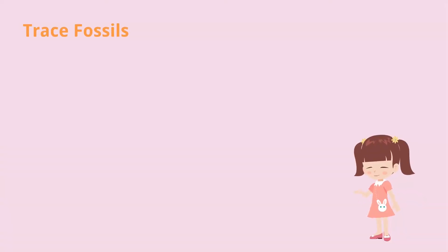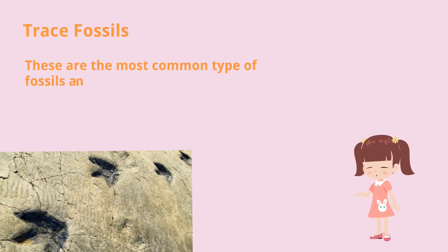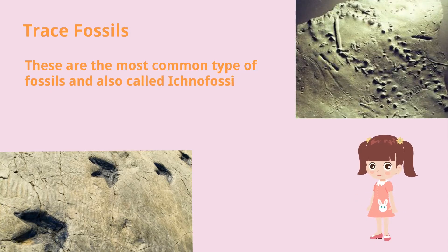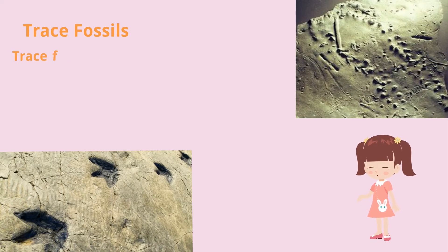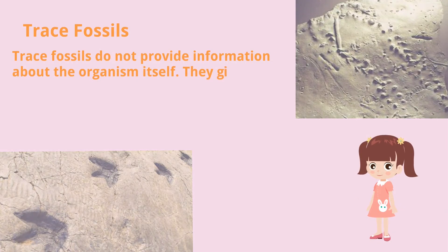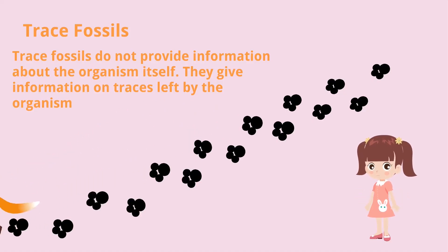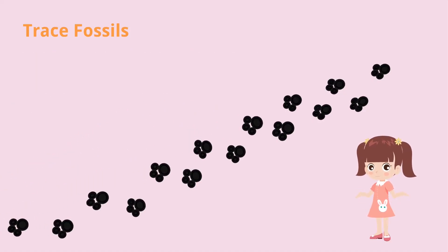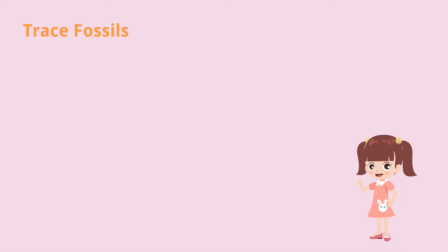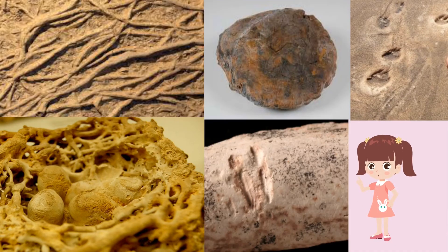Trace fossils are the most common type of fossils, and are also called ichnofossils. Trace fossils do not provide information about the organism itself — they give information on traces left by the organism. Common examples of trace fossils include burrows, nests, footprints, dung, and tooth marks.